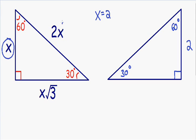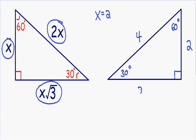We know that the length of the hypotenuse is double the value of x, or equal to 2x. So if our shortest side is 2, our hypotenuse is double that — 2 times 2 — which is 4. So the length of our hypotenuse is equal to 4. And the length of our side that is opposite of the 60-degree angle is equal to x multiplied by the square root of 3. So our x, which is 2, multiplied by the square root of 3 — that is the length of the side opposite of our 60-degree angle. So now we have completely solved this triangle.